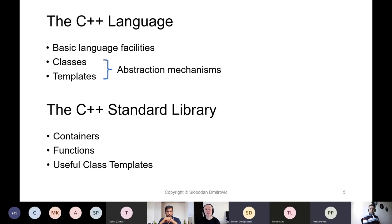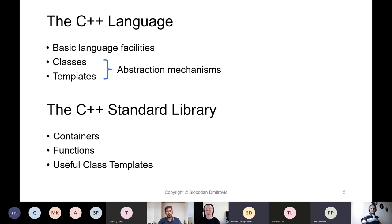What is the C++ standard library? It is a library of useful containers, functions, and other class templates and function templates that we can use in our programs. Every C++ compiler is accompanied by the C++ standard library.